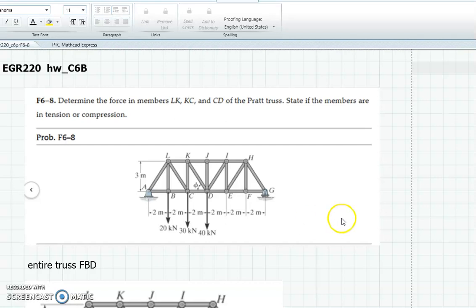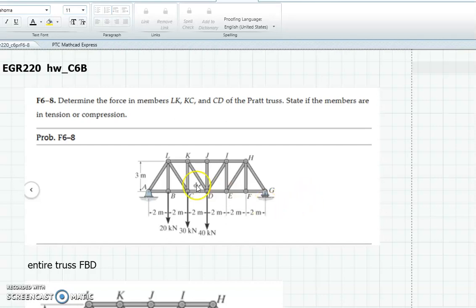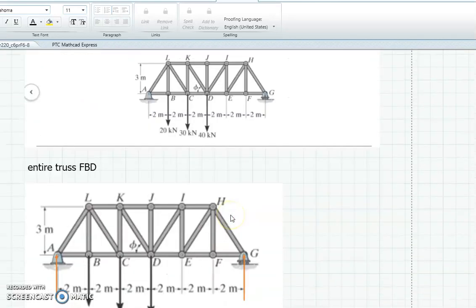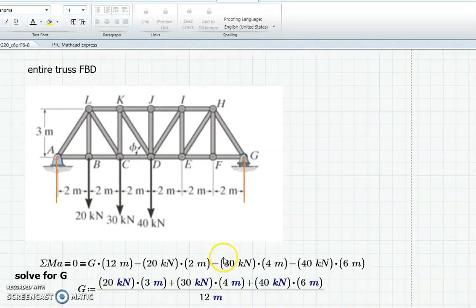So here's the truss, I think it's 6.8, that we want to analyze. It's got loads, it's got pins and a rocker, but there's no X-forces, so I just went ahead and drew a free body diagram. I did it on this just to save a little drawing. And so there's my A and there's my G, my supports. Didn't draw any one of the X because that's a roller, so you don't have one, which means that one would equal zero.